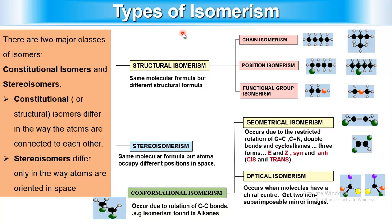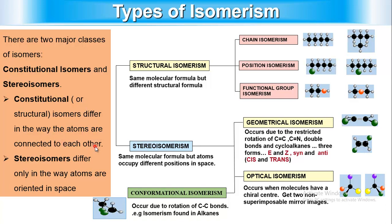What are the types of isomerism? The two major classes of isomers are constitutional isomers and stereoisomers. Constitutional (or structural) isomers are those which differ in the way the atoms are connected to each other. Stereoisomers differ only in the way their atoms are oriented in space.